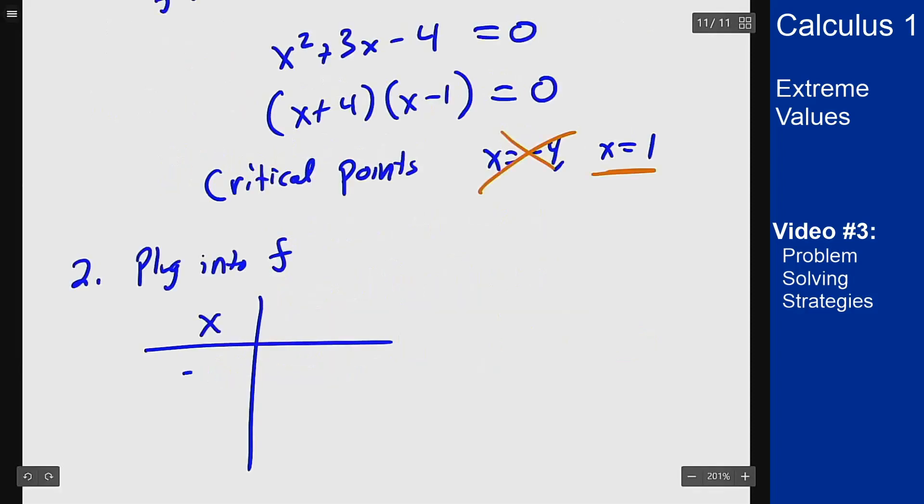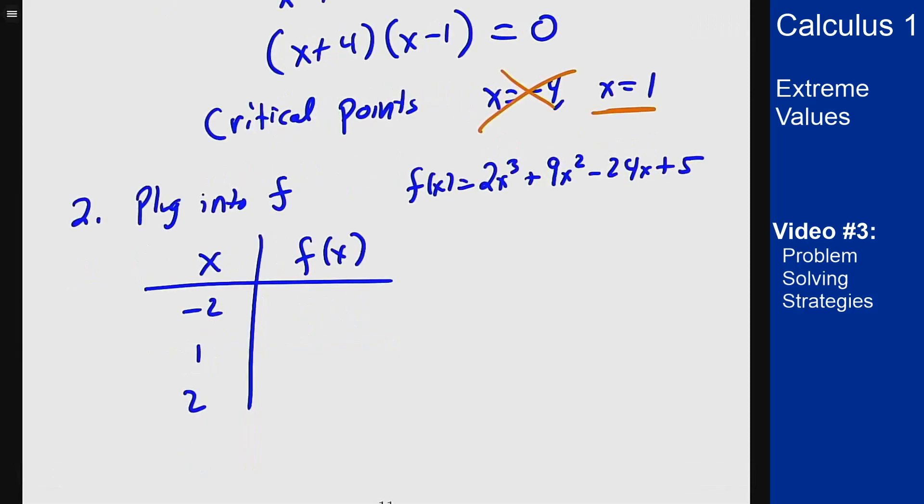I have x values of -2, 1, and 2. I can plug these into f. At x = -2 I get 2 times -8 which is -16 for the first term, plus 9 times 4, plus 48, plus 5. This gives me 73.